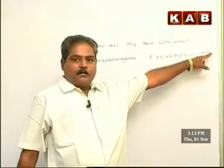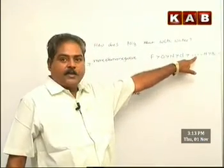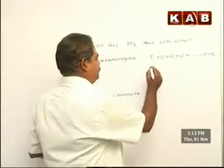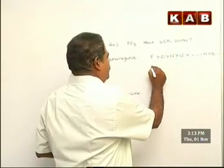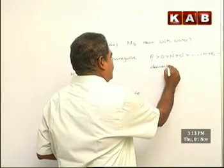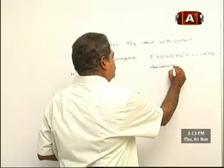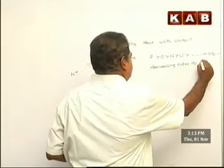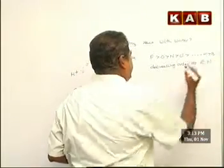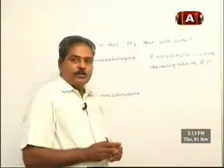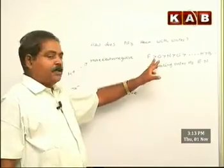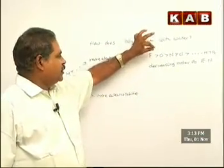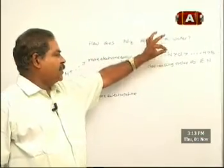The decreasing order of electronegativity — it is enough if you just know the first four: F greater than O greater than N greater than Cl.